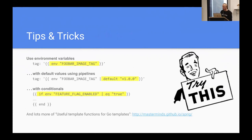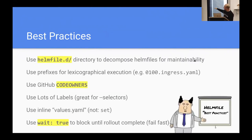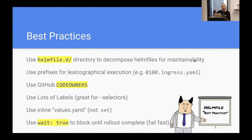Some tips and tricks we use: interpolation with environment variables allows us to keep our Helmfiles as generic as possible and set values at runtime. You can provide defaults which are overwritable, or gate features using conditionals. Originally you'd have 30 releases all in one Helmfile, which was unmanageable. Now you can decompose that into separate files in a directory called helmfile.d. Using GitHub controls like code owners, you can specify who's the subject matter expert on a particular release and require them to participate in code reviews. We suggest using labels for as much as possible and recommend using inline values in your Helmfiles.